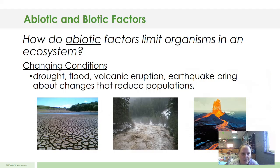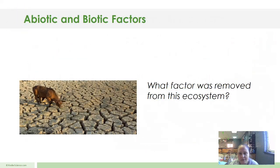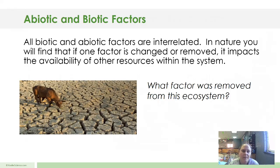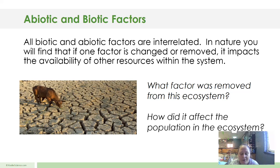How do abiotic factors limit organisms in an ecosystem? Changing conditions — droughts, floods, volcanic eruptions, earthquakes — bring about changes that reduce populations. Things we go through in our world also reduce populations. All biotic and abiotic factors are interrelated. In nature, if one factor is changed or removed, it impacts the ability of other resources within the system. For example, water was removed from this ecosystem — that's why there's a drought. There are fewer animals that survive. How did it affect the population? Either they die off or they migrate to find water in other places.